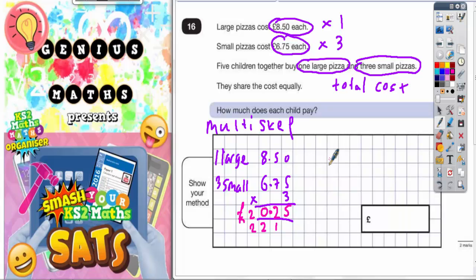Now we need to find the total cost. The total cost is going to be the £20.25 added to the large pizza. So your three small pizzas add your large pizza which is £8.50. Let's work that out. Five plus nothing is five. Two plus five is seven. Nothing plus eight is eight. Two plus nothing is two. So our total cost is £28.75.